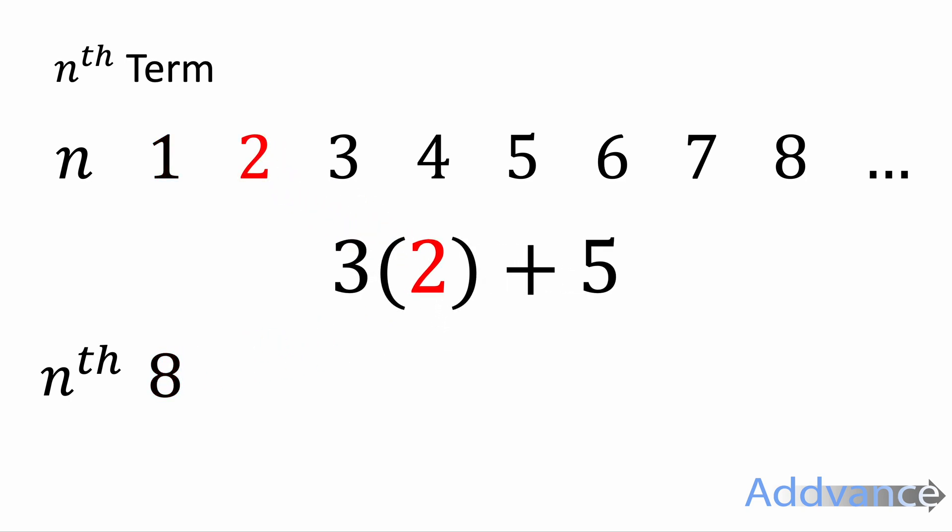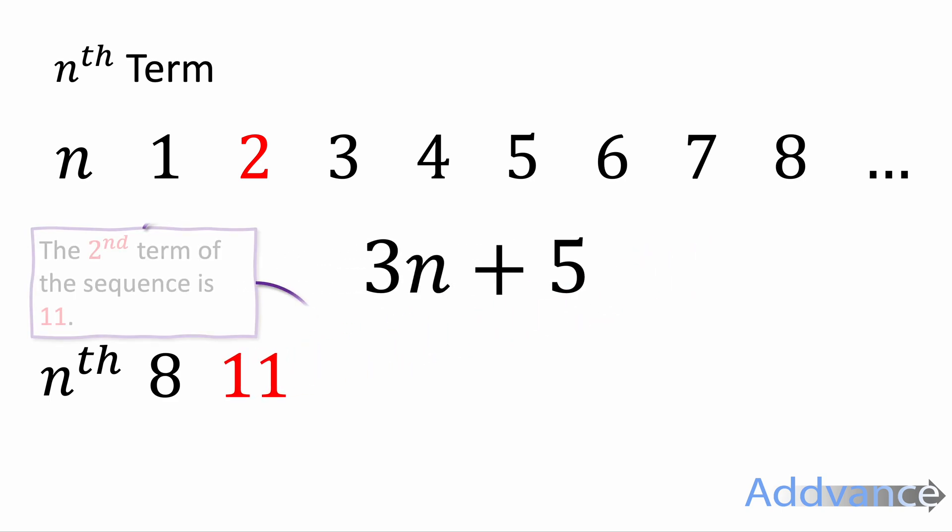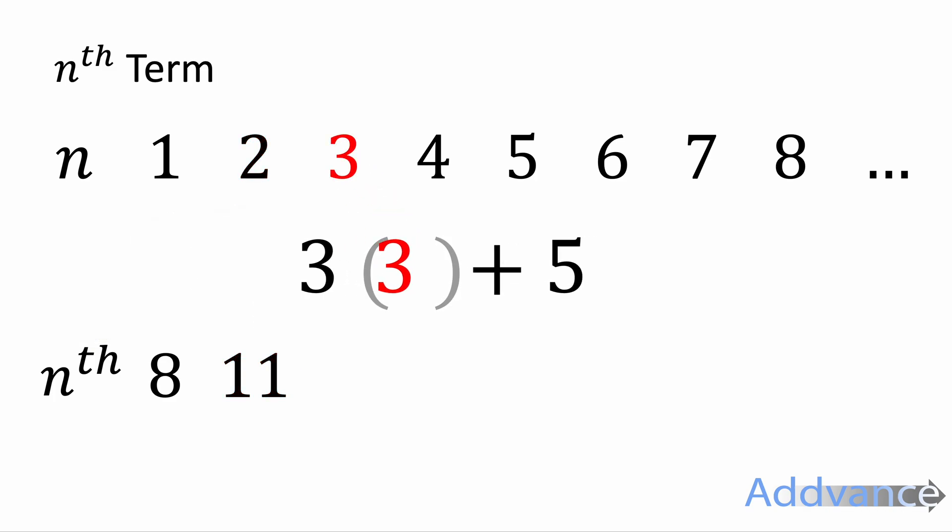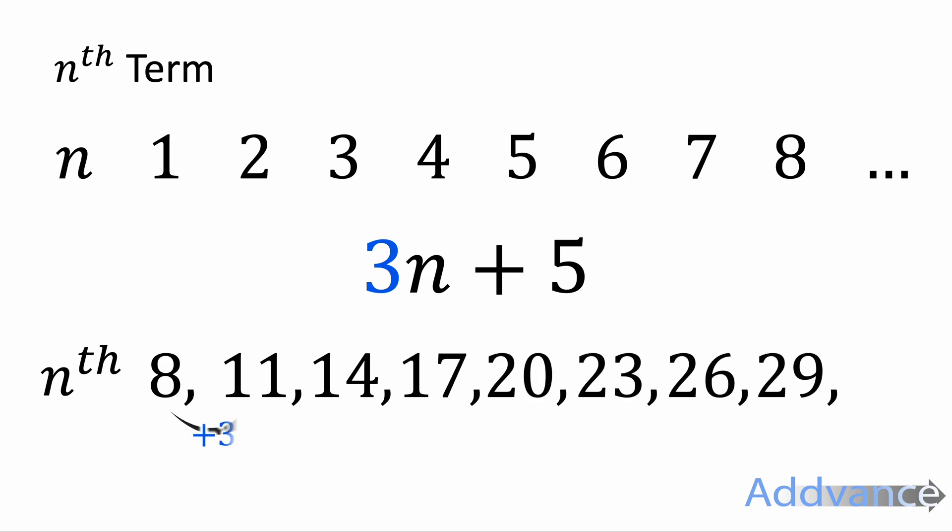Let's go again. Three times two plus five will give you 11, and that tells us the second term of the sequence is 11. Let's keep going. Three times three plus five is 14, so the third term is 14. And you should see that this sequence is just continually going up by three each time.